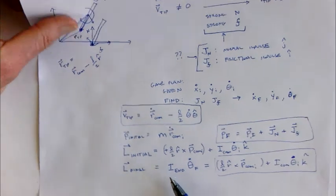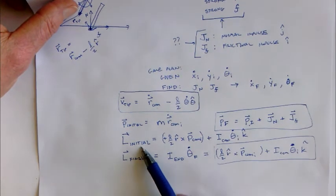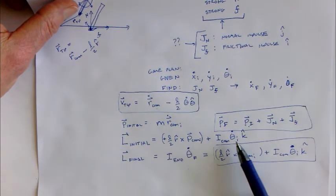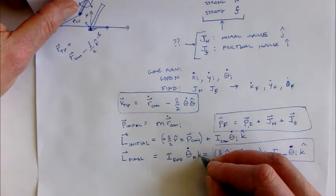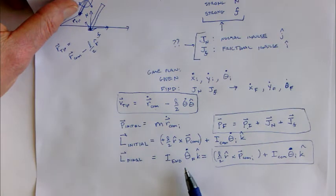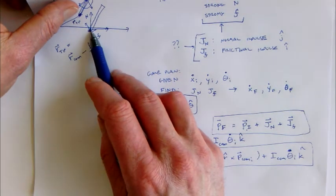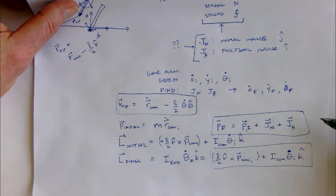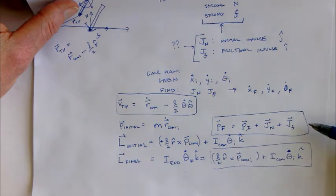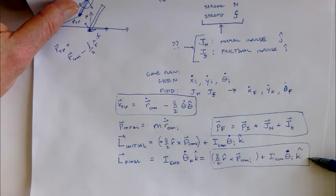Similarly, we came up with expressions for the initial and final angular momentum. The initial angular momentum will have a part due to translation and a part due to rotation. The final angular momentum, because the caber is pivoting around the point on the ground, will only be rotational. Furthermore, since the impulses are being applied at that point, the final angular momentum will actually be the same as the initial angular momentum.